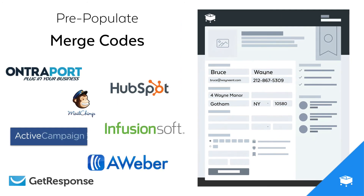And just about any email marketing tool you use that integrates with SamCart will allow you to use merge codes, so that you can send out an email to everyone on your list and Entreport, HubSpot, or Infusionsoft will automatically pull in that specific subscriber's name, email address, and phone number. Merge codes make it easy to send one email to a lot of people, and each person will have their specific information pre-filled on the checkout page.